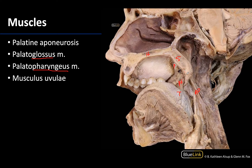Lastly, the musculus uvulae is a pretty distinct muscle. If you are looking at muscle on the uvula, you are looking at the musculus uvulae — it's just going to be any of those muscle fibers associated with that. And those are the soft palate muscles, five muscles with pretty intuitive names, particularly these last three.